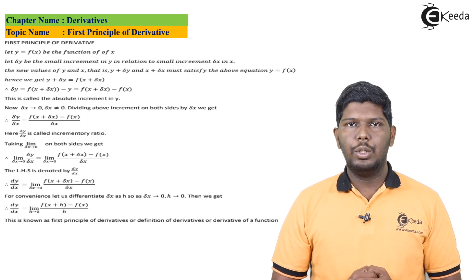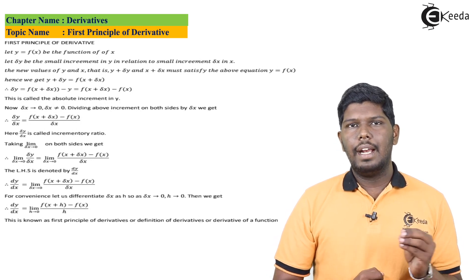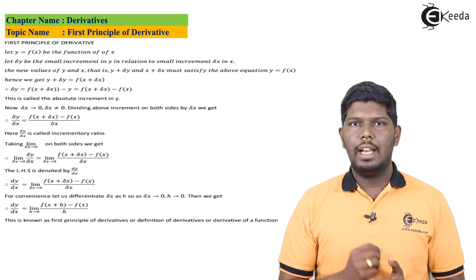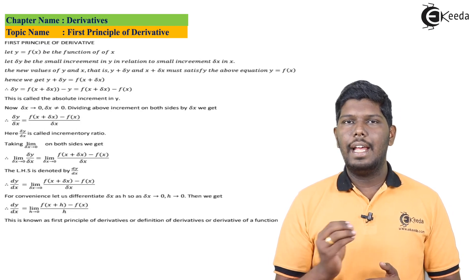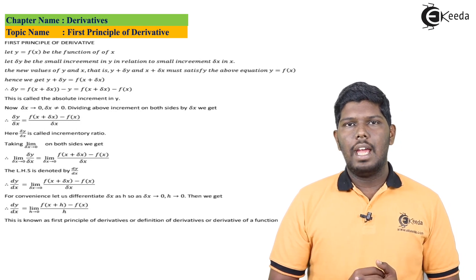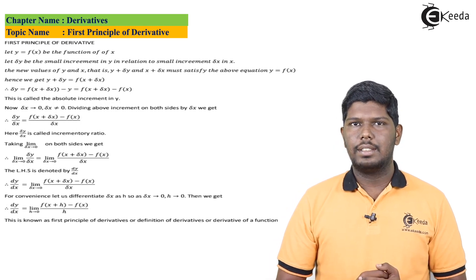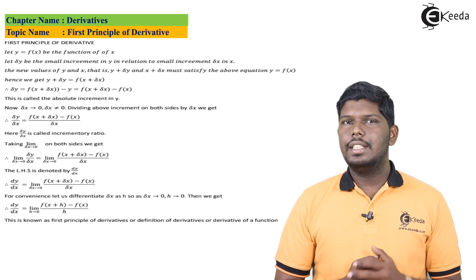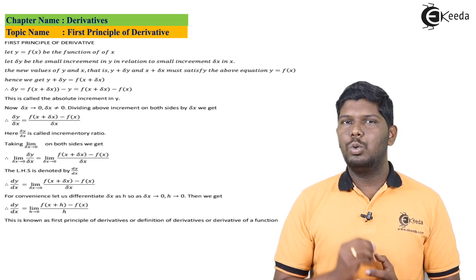So we'll have limit del x tending to 0 of del y by del x equals limit del x tending to 0 of f of x plus del x minus f of x divided by del x. Now if you see the left hand side, we have limit del x tending to 0 of del y by del x.